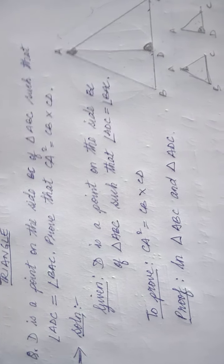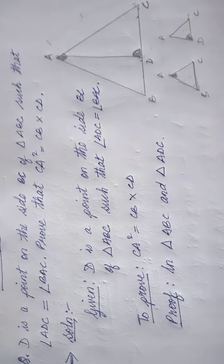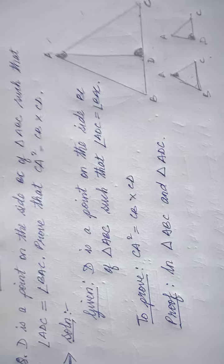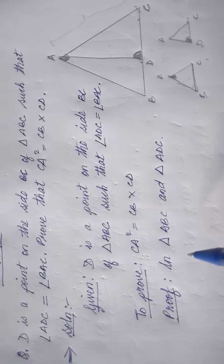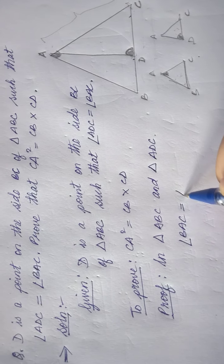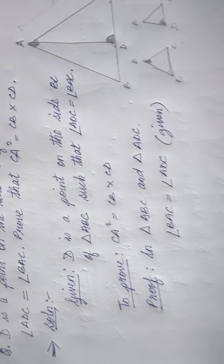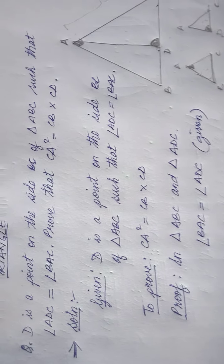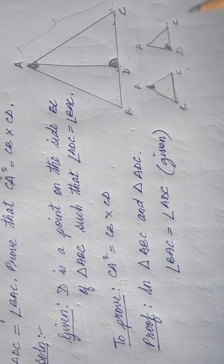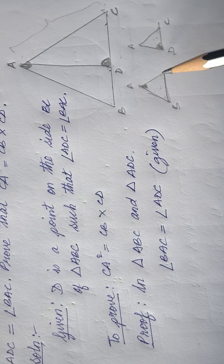The first similarity: angle A equals angle D, which is given to us — angle BAC is equal to angle ADC. Now we look at both triangles and notice that both triangle ABC and triangle ADC share angle C.